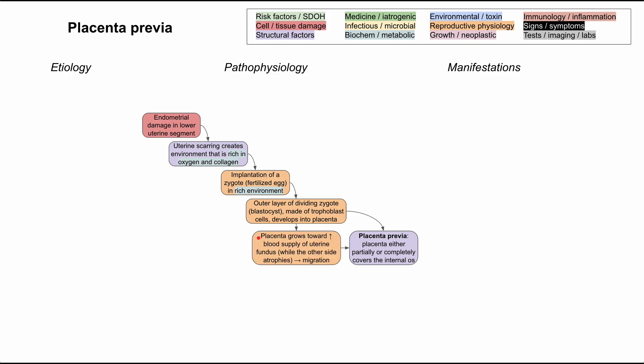In addition, the placenta tends to grow toward areas of the uterus that have increased blood supply, and it turns out that the uterine fundus, which is close to the internal os, does have increased blood supply. So when the placenta starts to expand, it will favor growth in that direction. The other side of the placenta will actually atrophy and get smaller. Although the placenta is not actually moving during the pregnancy, it has this migration-like effect as it grows toward the uterine fundus, which can worsen the amount of coverage over the internal os.